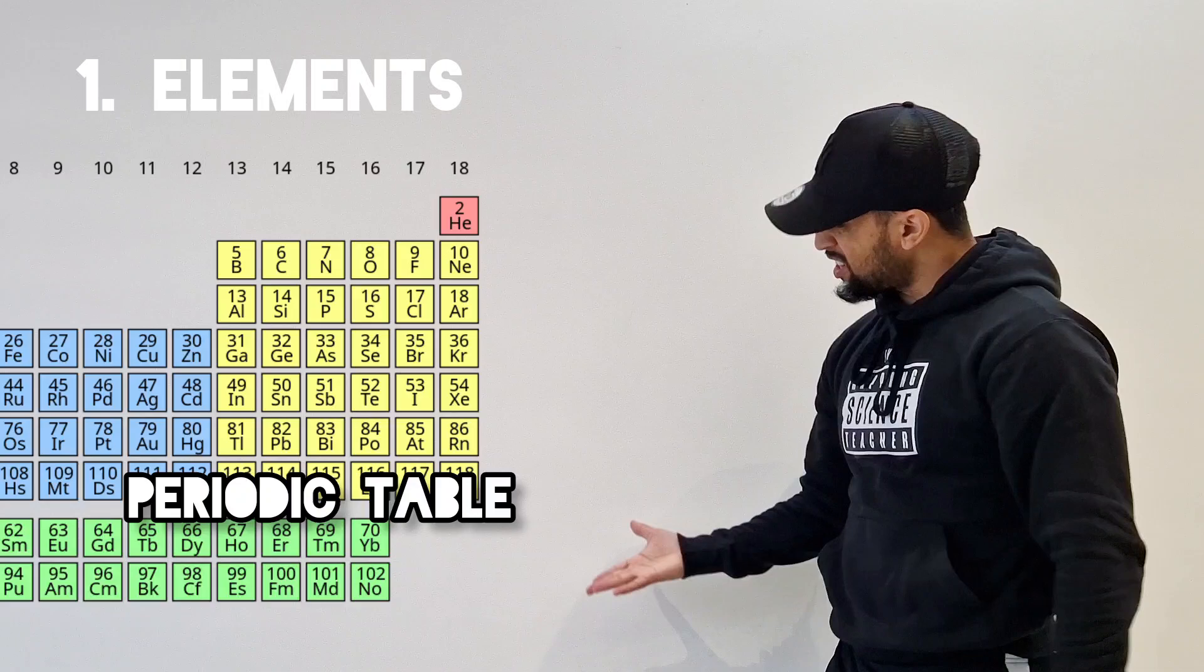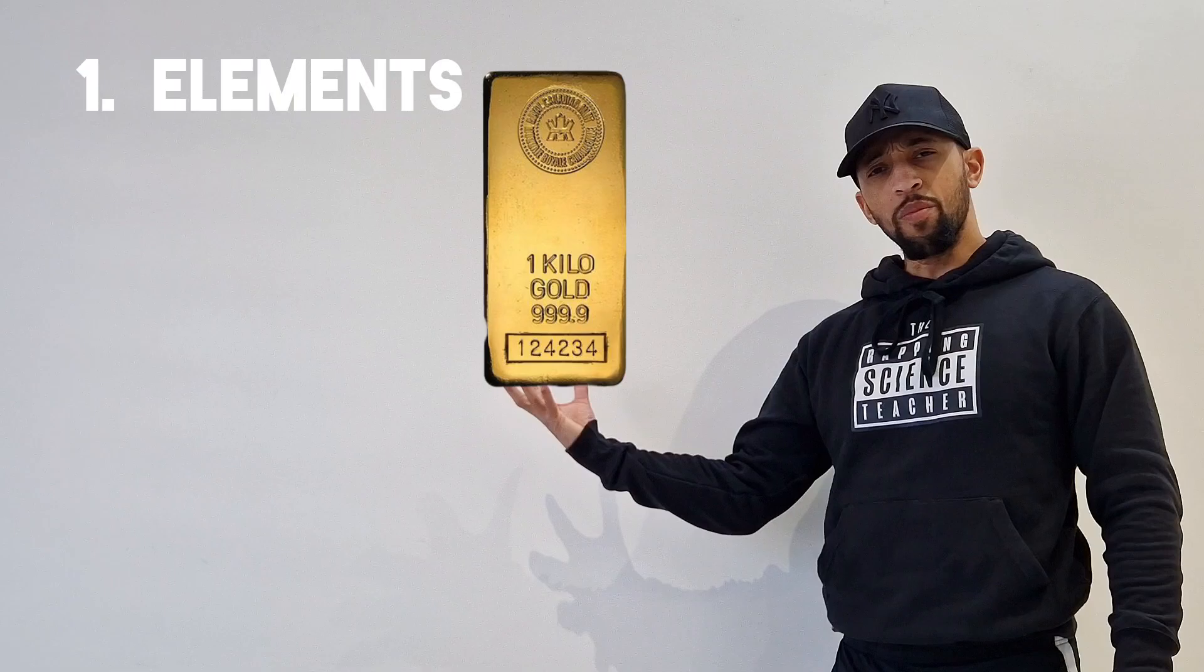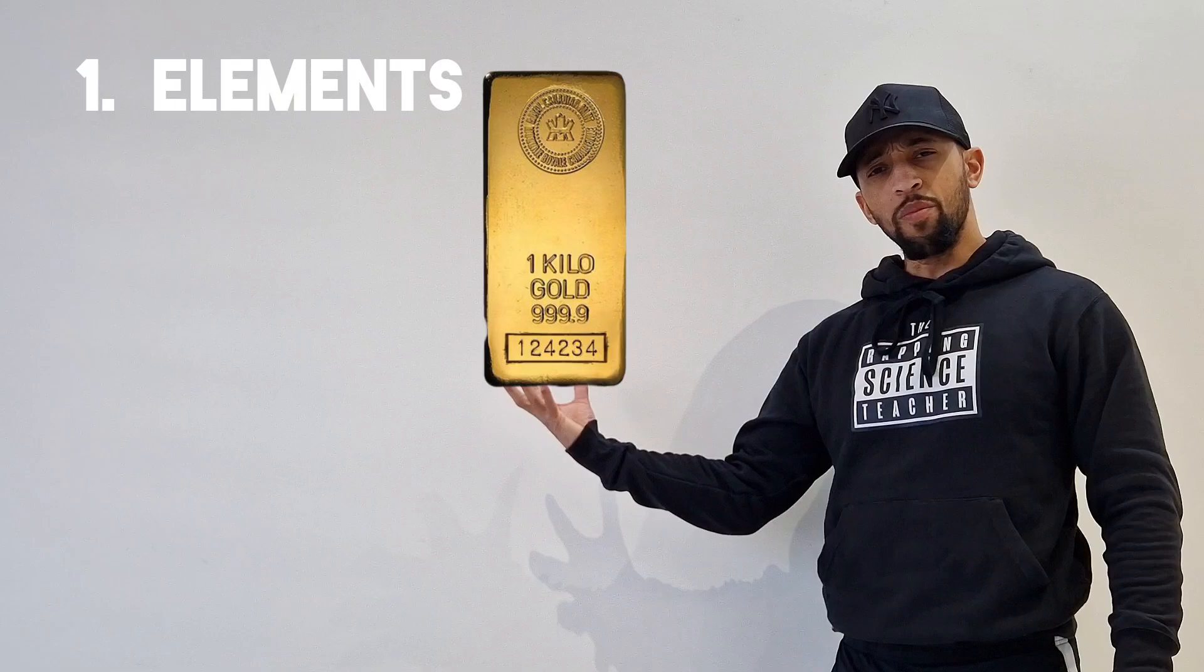Let's start with elements. Let me show you this table. They're arranged here all real elegant, all 100 here with these labels. Now take gold here for example. What I hold in my hands is pure, only one atom type